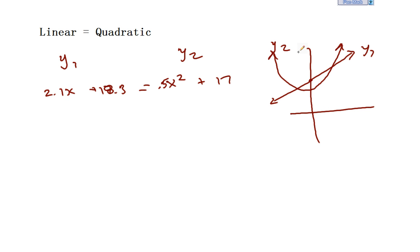In this context, I have a linear equals a quadratic. So 2.1x plus 18.3 equals 0.5x squared plus 17. And graphing these, hopefully you can sketch these now, and you can kind of see what they might look like. Any equation that has x squared in it, in and of itself, it's a parabola. It's a quadratic function.